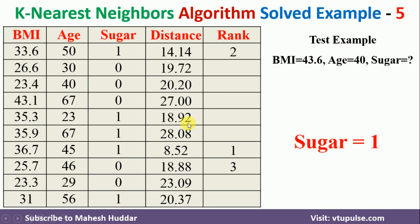This is a very important step: with respect to the nearest neighbors, we count how many times 1 appears and how many times 0 appears. The first and second nearest neighbors have the value 1, and the third nearest neighbor has the value 0. So out of 3, two are 1 and one is 0 — class 1 has the majority, hence the instance is classified as 1.